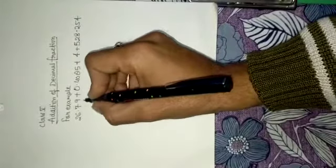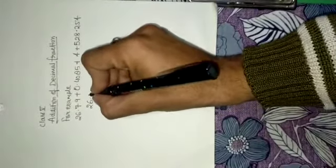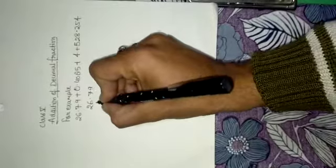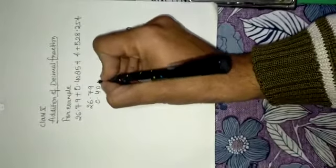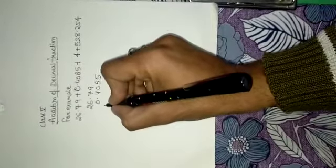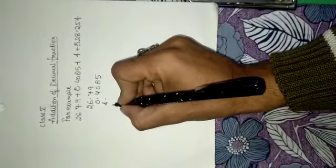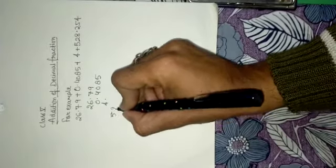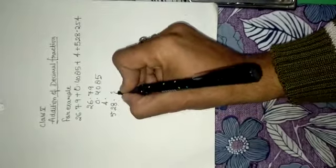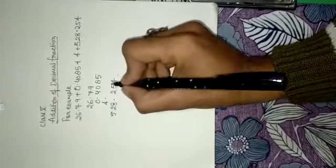First what we have to do, we have to arrange them in a series like 26.79, 0.4085, then here it is 4, then 528.254.